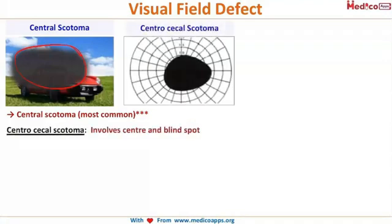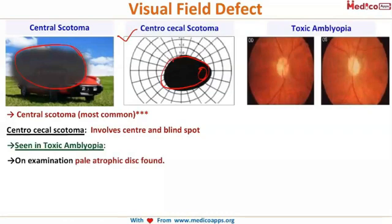There is invariably a visual field defect in optic neuritis, and the characteristic one is a central scotoma — a central dark patch where the patient cannot see. A similar-sounding but distinct finding is the centrocecal scotoma, which involves the blind spot as well as the central area. The centrocecal scotoma is characteristically seen in toxic amblyopia.